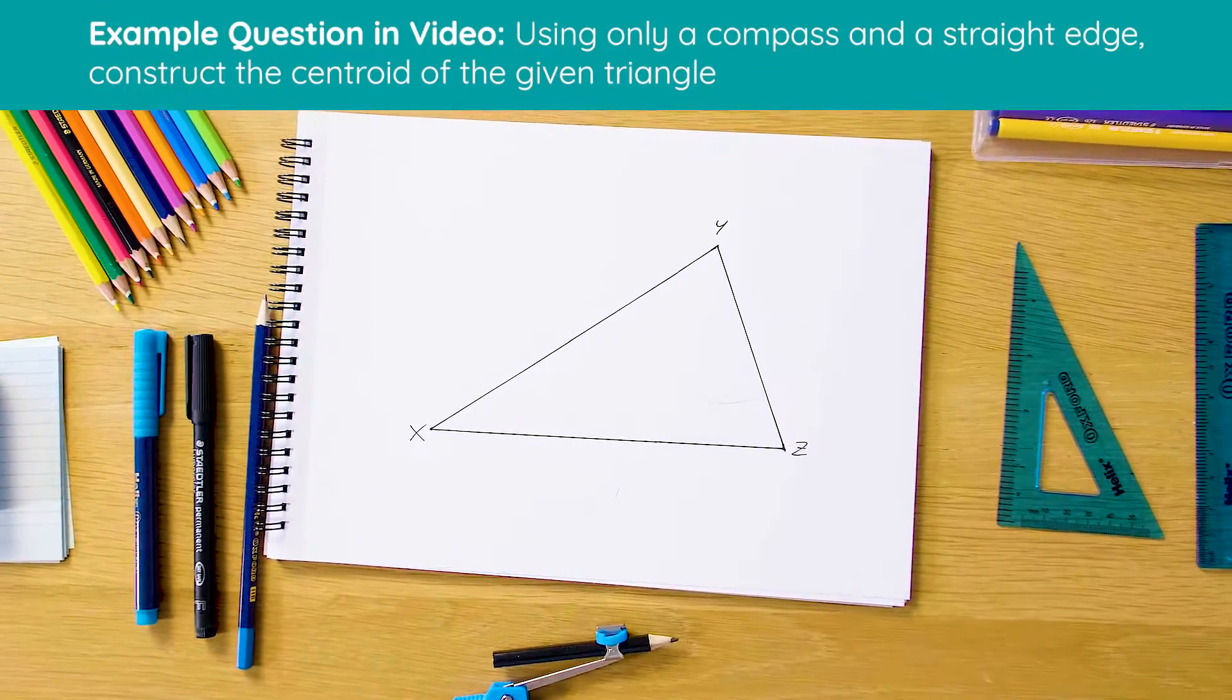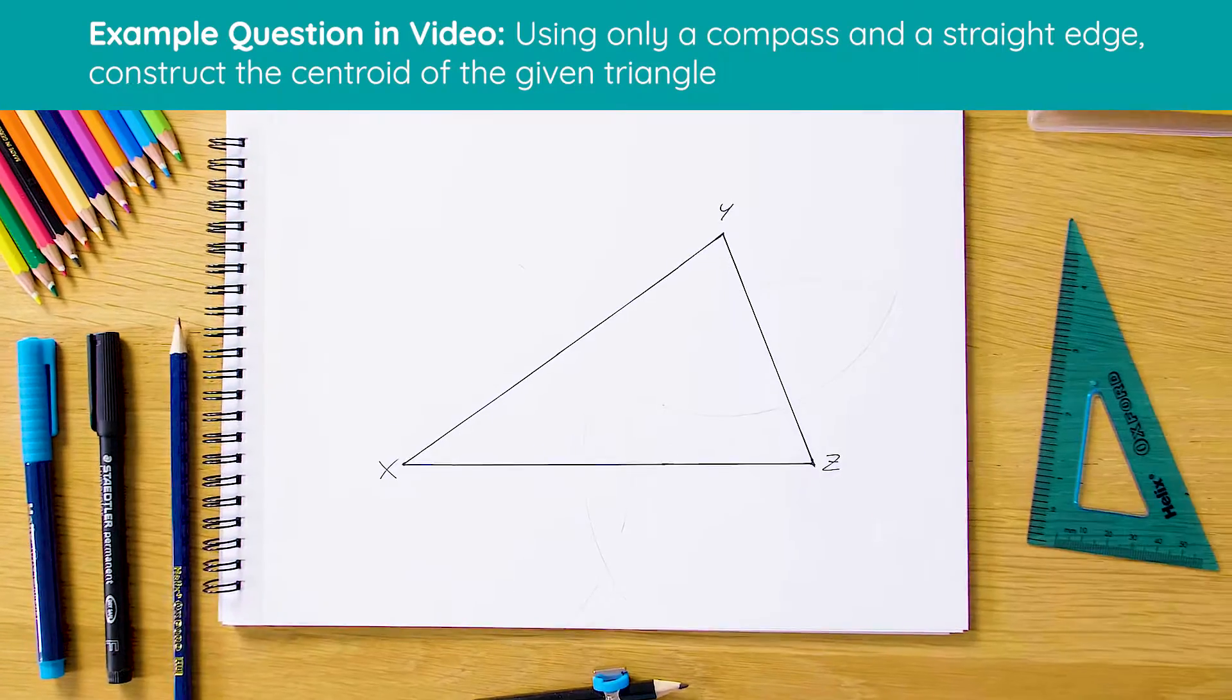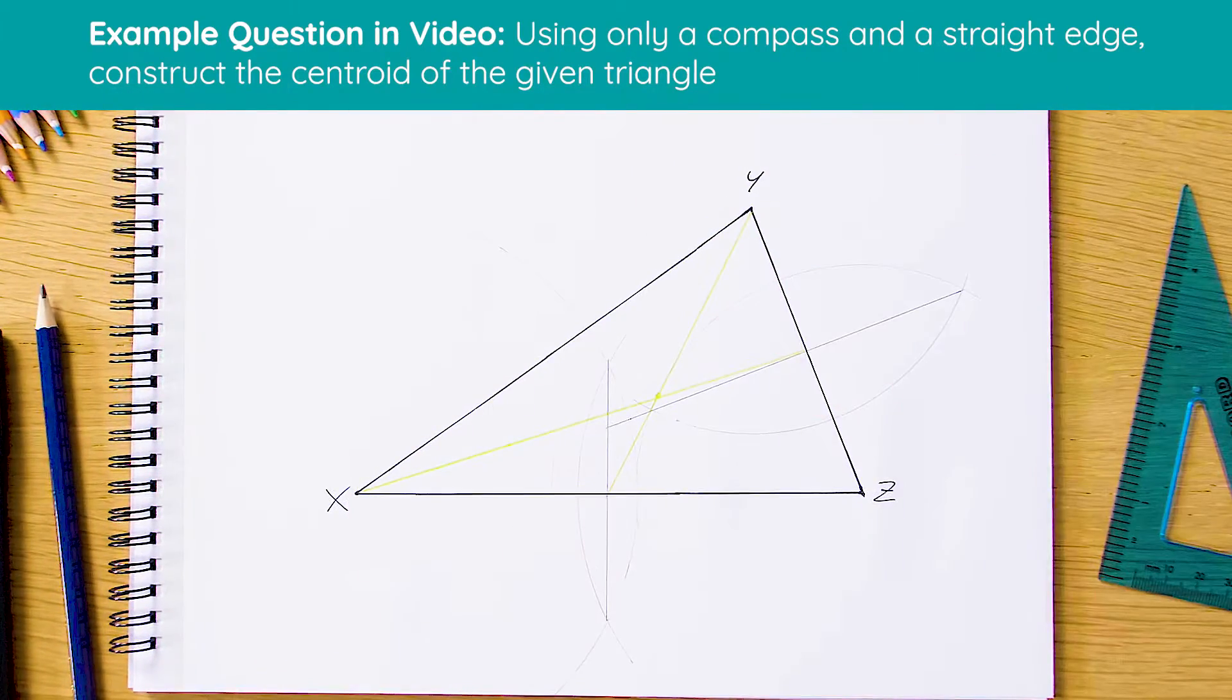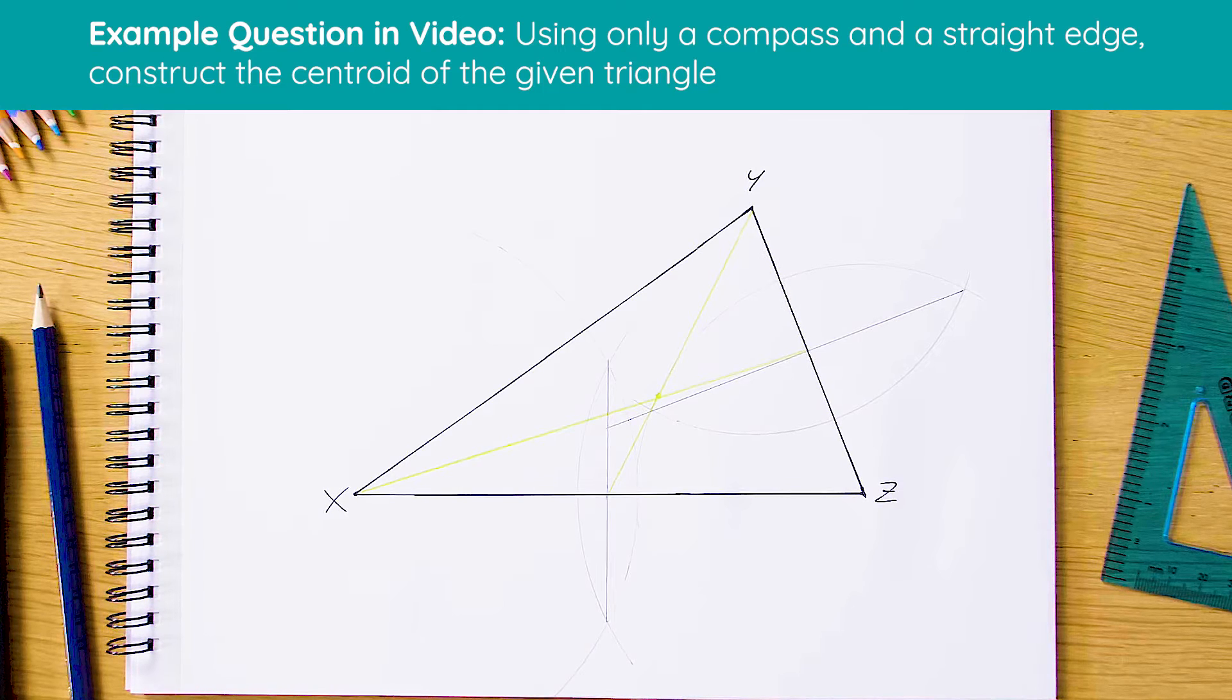Okay, so here's our finished centroid. As you can see, our lines are nicely bisected. One thing I will say is that the first half of the method in which we're bisecting lines is very similar to finding the circumcentre, but then the method is going to change halfway through. Let's see how that works.